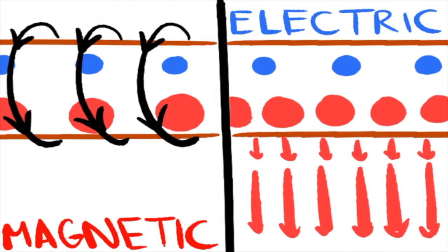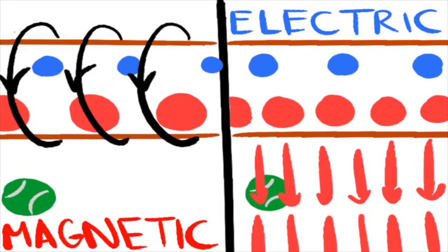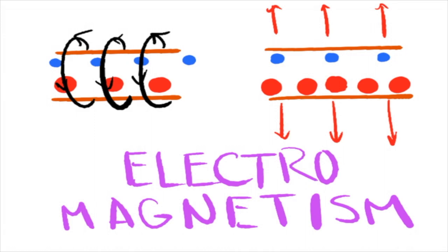What was an electric field from one point of view was a magnetic field from another. They're both just one field, the electromagnetic field.